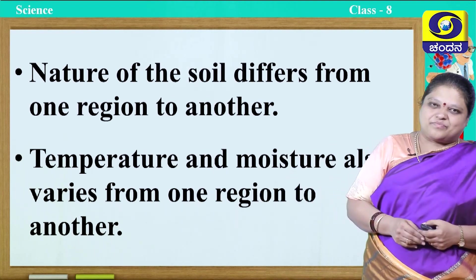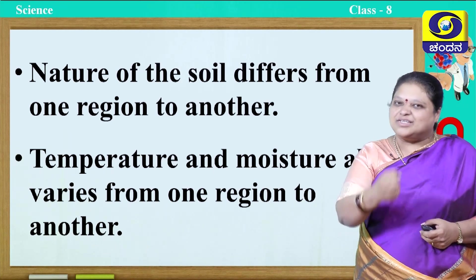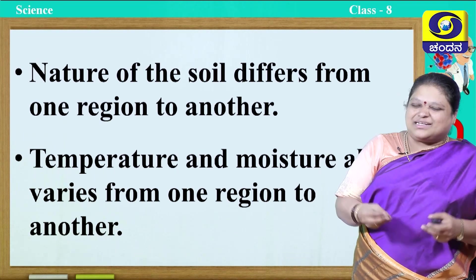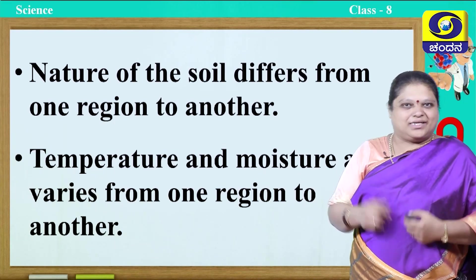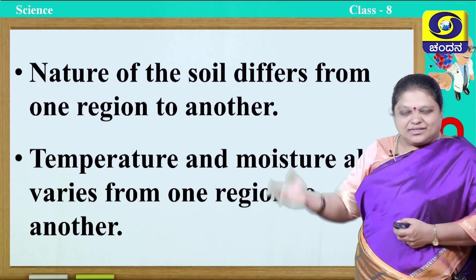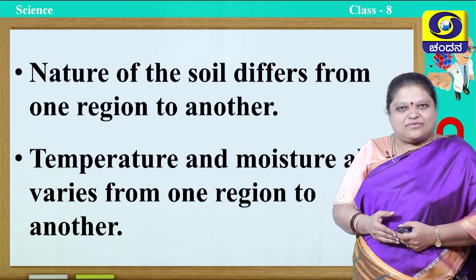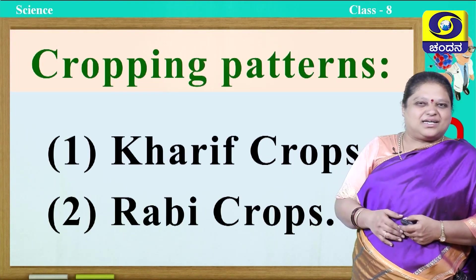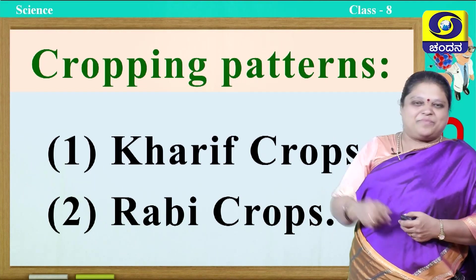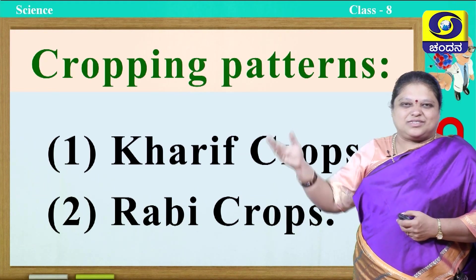Next is moisture — how much water content is present in the soil is also important. Sometimes a little moisture is enough; sometimes lots of water is required. For example, paddy requires lots of water. Like this, various reasons account for the non-uniform nature of growing crops. Now, in India we basically see two types of cropping patterns: first is the Kharif crop and next is the Rabi crop.